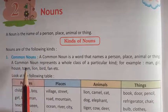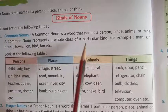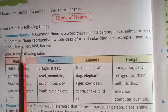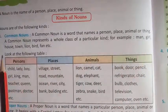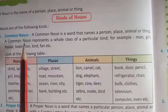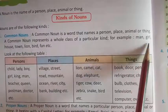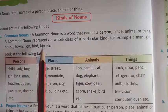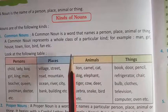First is a Common Noun. Common Noun is a word that names a person, place, animal, or thing. Common Noun represents a whole class of a particular kind. For example: man, girl, house, town, lion, bird, fan, etc.